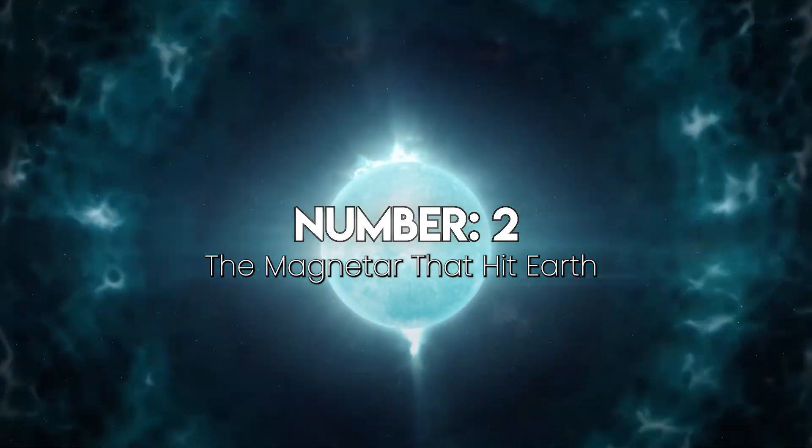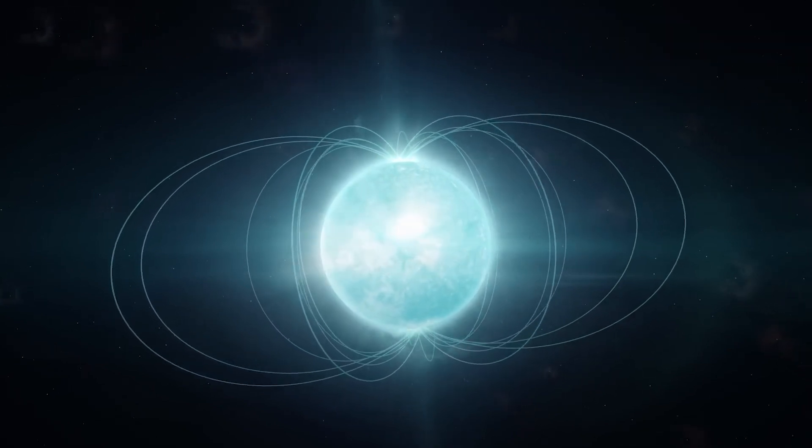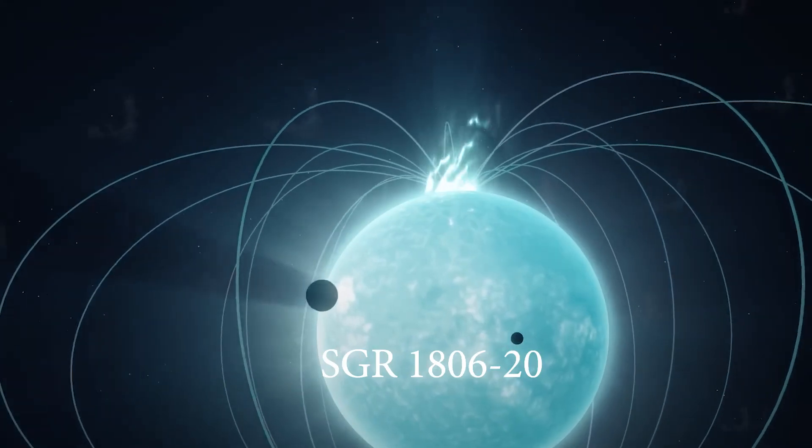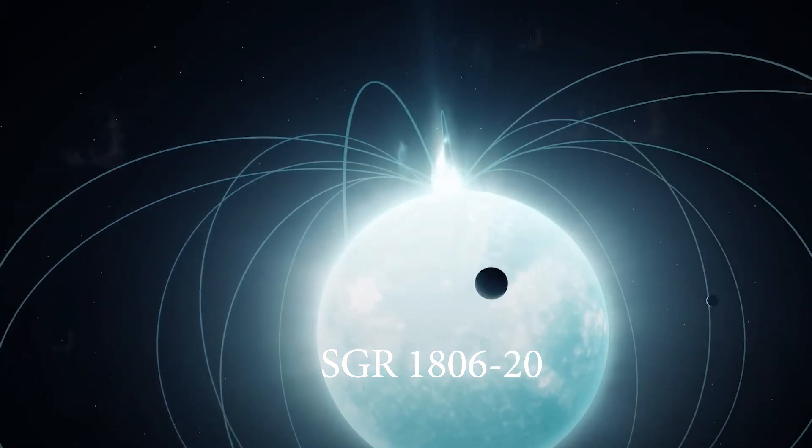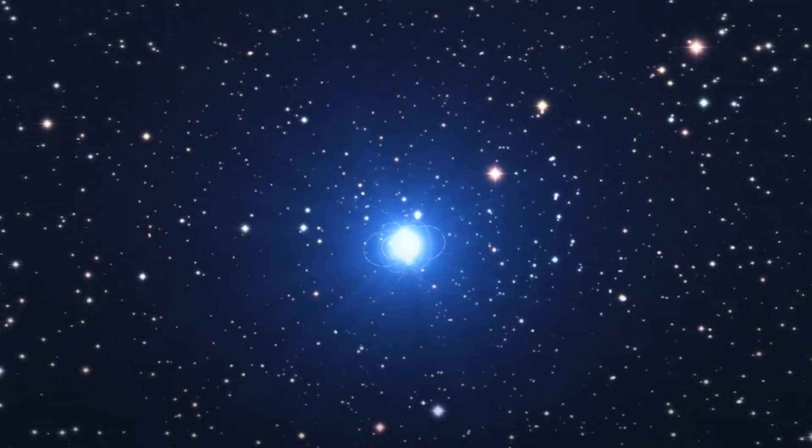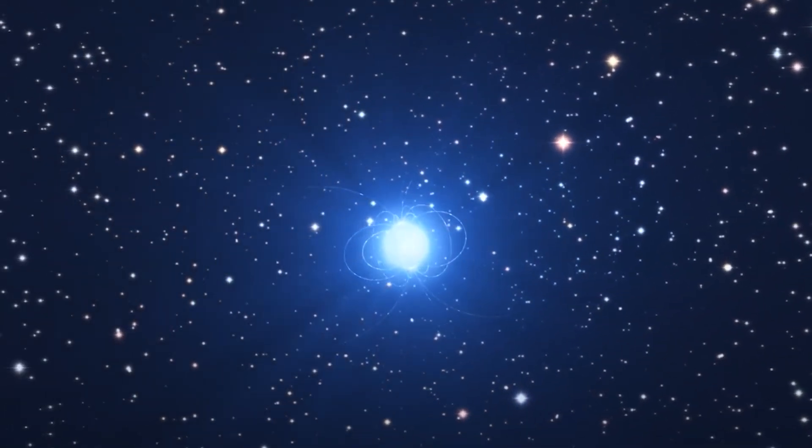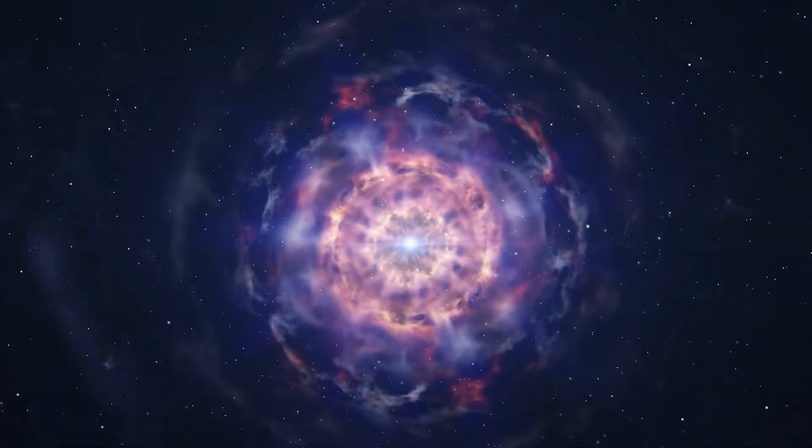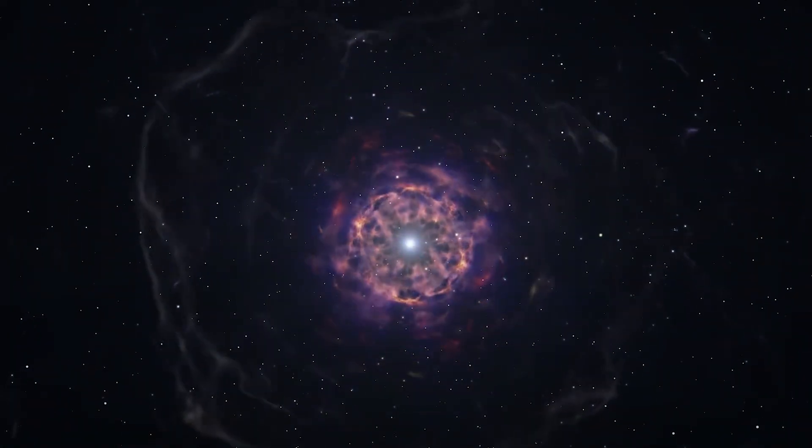Number 2: The magnetar that hit Earth. On December 27, 2004, Earth was blasted by a wave of gamma rays from SGR 1806-20, a magnetar 50,000 light-years away. It was the brightest event ever recorded outside the solar system. It outshone the full moon in gamma rays, it ionized the upper atmosphere, it knocked out satellite instruments, and disrupted radio communication worldwide.